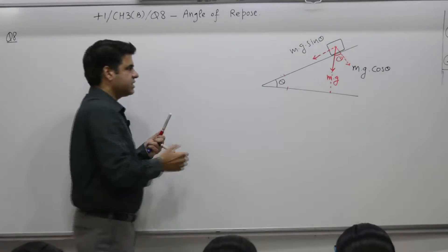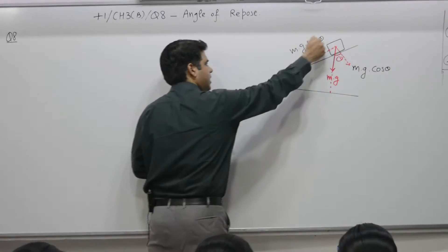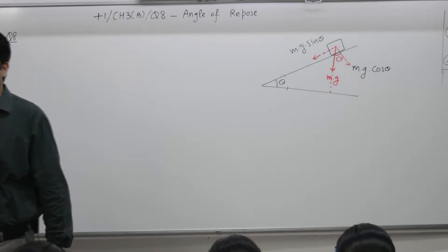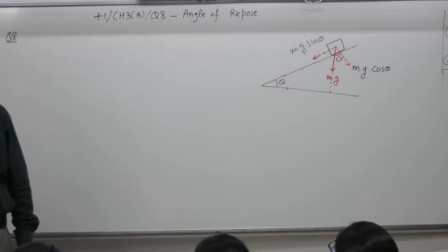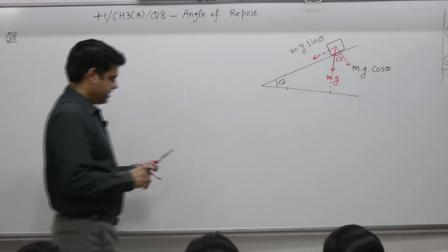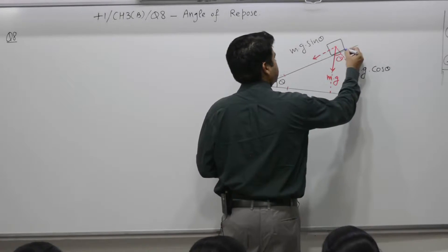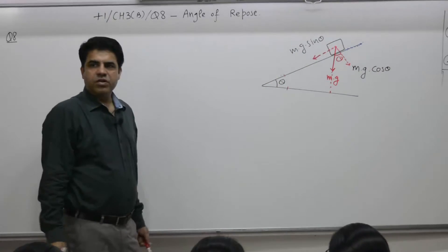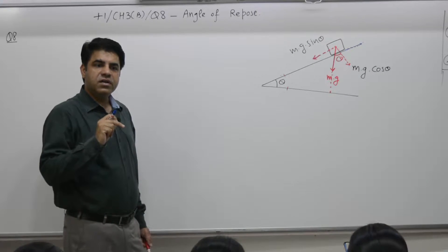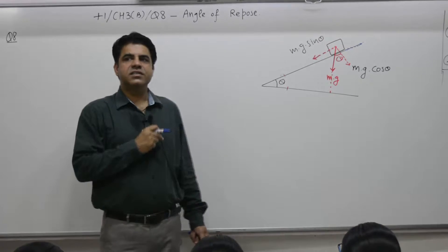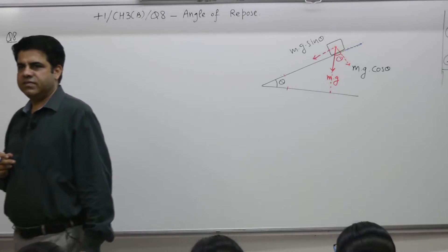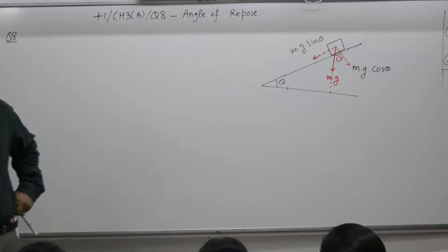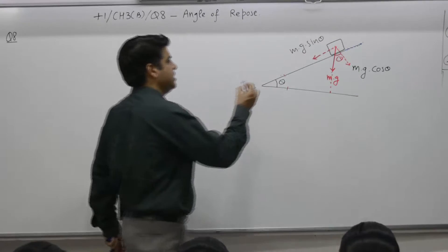That means it is the component mg sinθ which tries to bring the object down. But something opposes it — friction on the inclined plane opposes it. Because there is a tendency to move downwards, friction will act upwards. Friction is opposite to the tendency of motion; the tendency is to move downwards, that is why friction acts upwards.